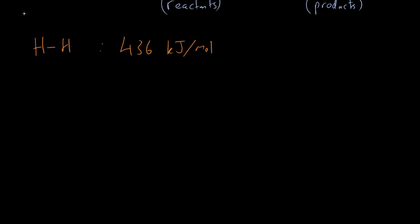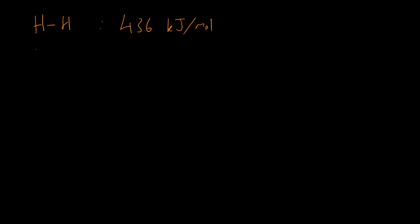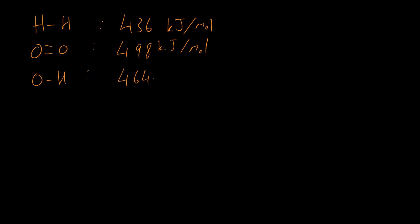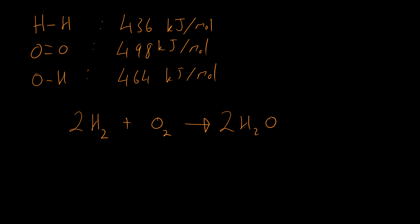Let's look at an example. We'll use the H-H bond (436 kJ/mol), the oxygen double bond O=O (498 kJ/mol), and the O-H bond (464 kJ/mol). The question is: what is the change in energy for the reaction inside a fuel cell? In a fuel cell, hydrogen plus oxygen makes water. Balancing gives us 2H₂ + O₂ → 2H₂O. It can be helpful to draw out the molecules because some contain more than one bond — for example, water (H₂O) has two O-H bonds.